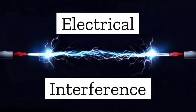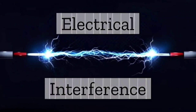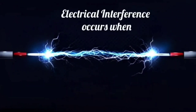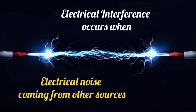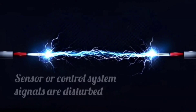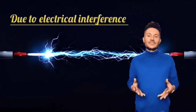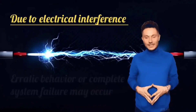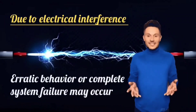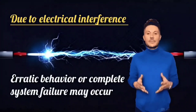The next fault is electrical interference. Electrical interference occurs when electrical noise comes from other equipment or sources, which disturbs sensor or control system signals. Due to electrical interference, erratic behavior or complete system failure may occur.